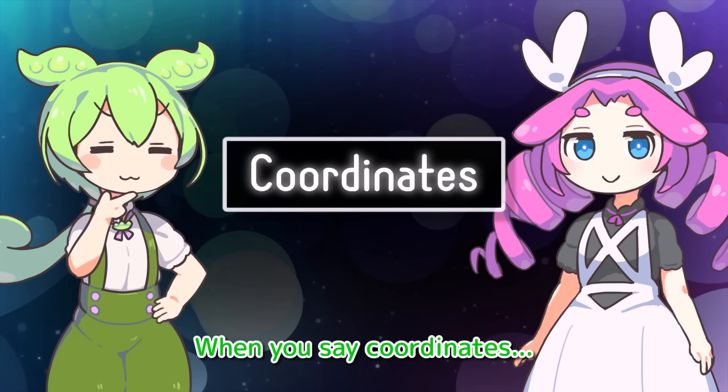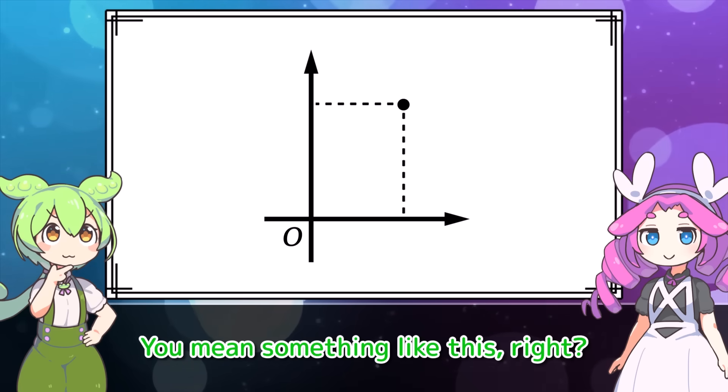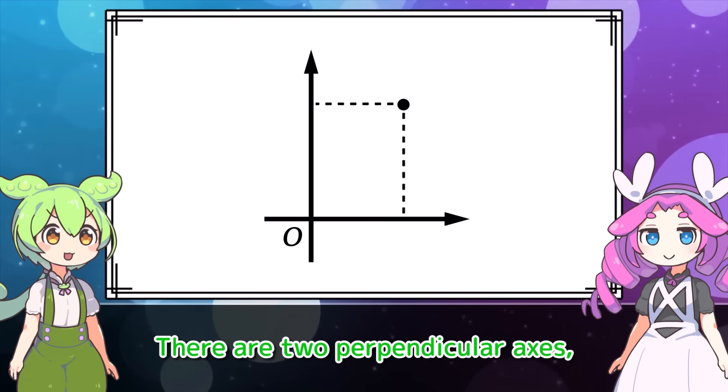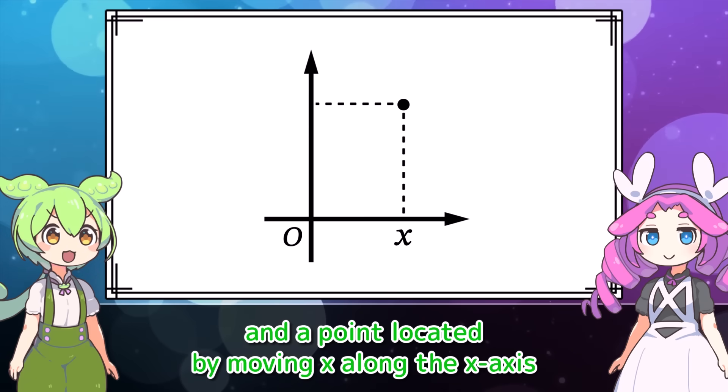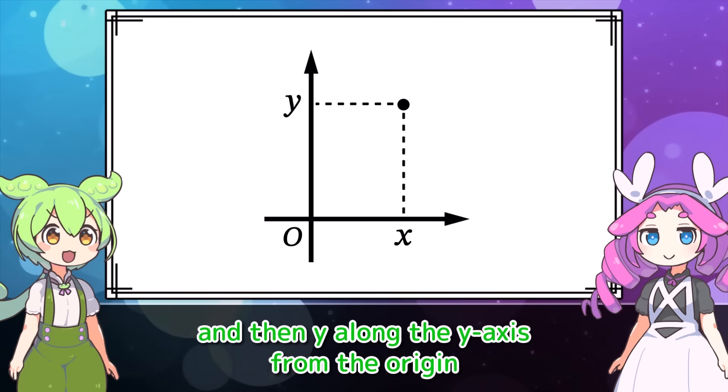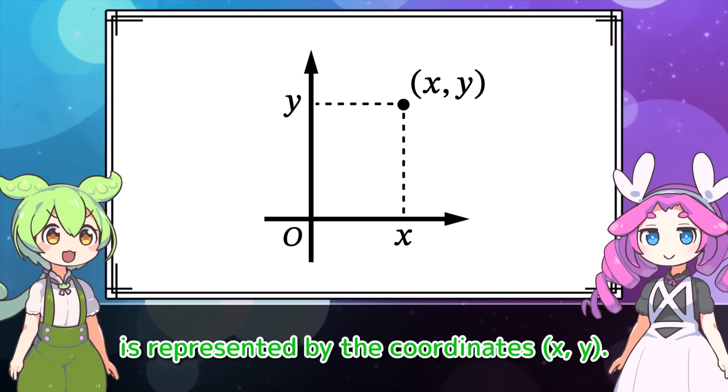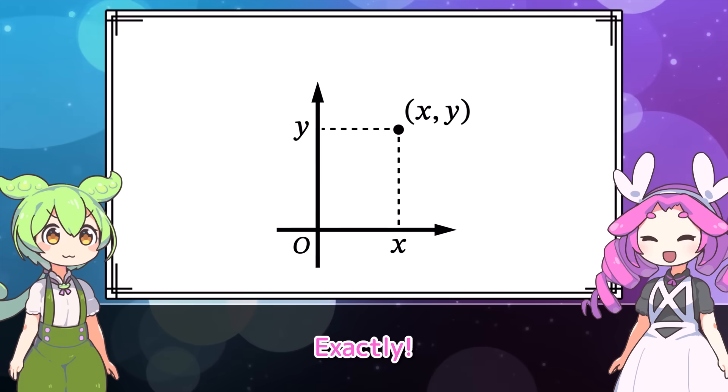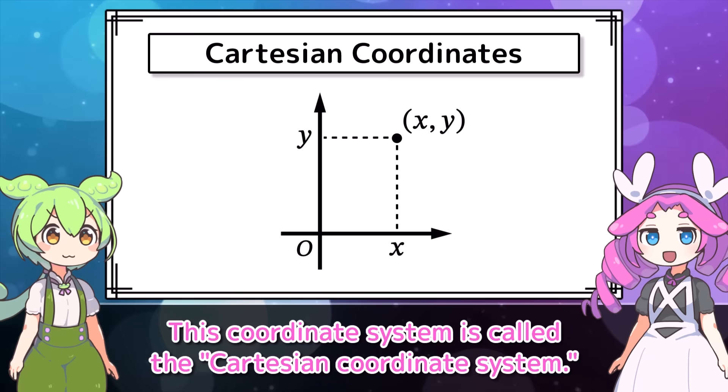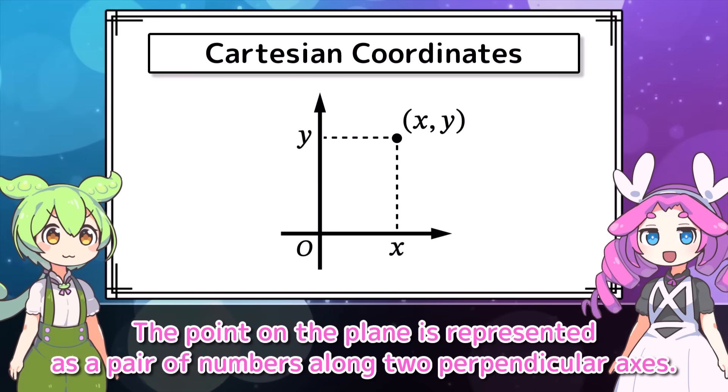Coordinates? When you say coordinates, you mean something like this, right? There are two perpendicular axes, and the point located by moving x along the x-axis, and then y along the y-axis from the origin is represented by the coordinates x, y. Exactly. This coordinate system is called the Cartesian coordinate system.